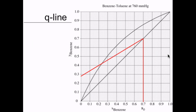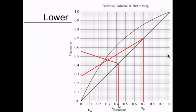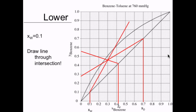Next is the Q line. We identify ZF equals 0.42 and draw the line; it cuts through the diagonal at ZF equals 0.42. With Q equals 0.25, the slope of the Q line is Q divided by (Q minus 1), which equals minus 0.33. Then we draw the lower operating line: XW equals 0.1, so the lower operating line goes through the diagonal at XW equals 0.1. We draw the line through the intersection of the upper operating line and the Q line, and then we're done with the operating lines.